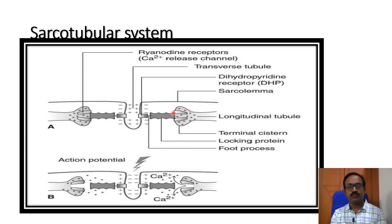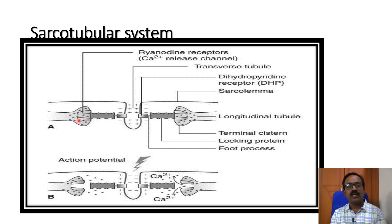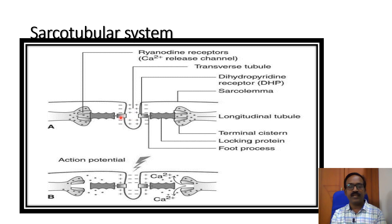The L-tubule contains the terminal cisterns, which contain the ryanodine receptor — these are the calcium release channels. The dihydropyridine receptors and ryanodine receptors are mechanically linked by the linking protein. When the action potential reaches the T-tubule, it opens the dihydropyridine receptors, which causes structural changes of the linking protein. This releases calcium from the terminal cistern into the cytoplasm of the skeletal muscle, increasing the calcium level 2000 times, raising the cytoplasmic calcium level.